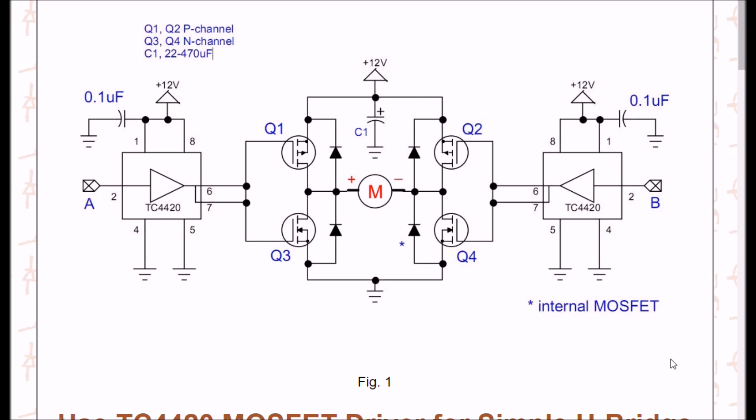In my next video, we will be going over using the TC4420/29s to build a simple, easy-to-construct, high-performance H-bridge circuit. Thanks for listening. Visit my website at www.bristolwatch.com. Have a great day.